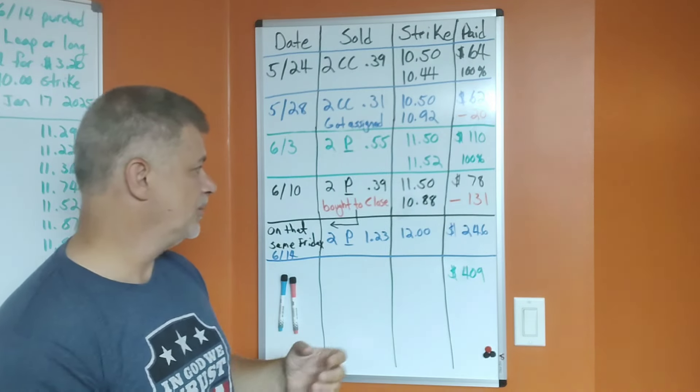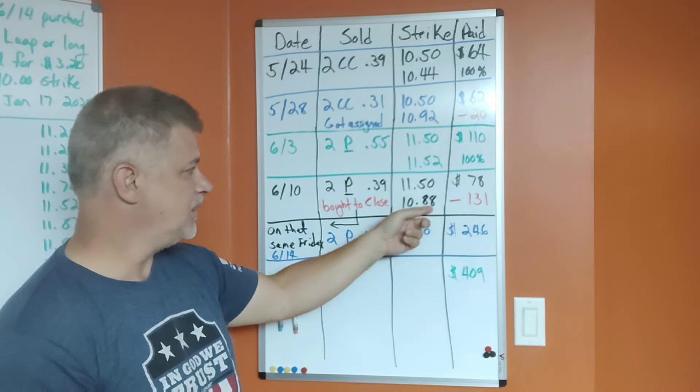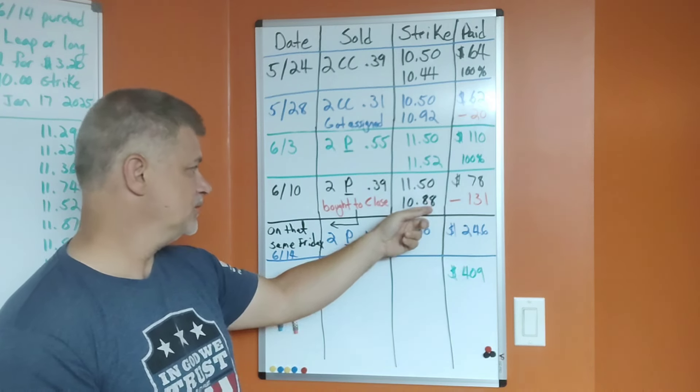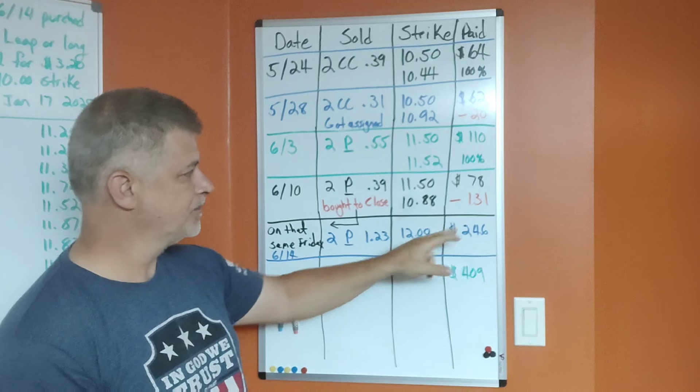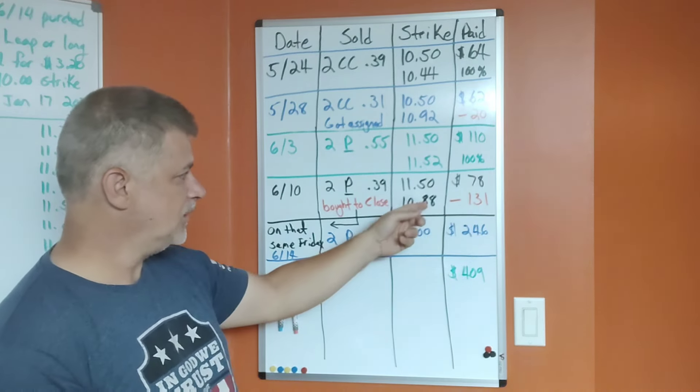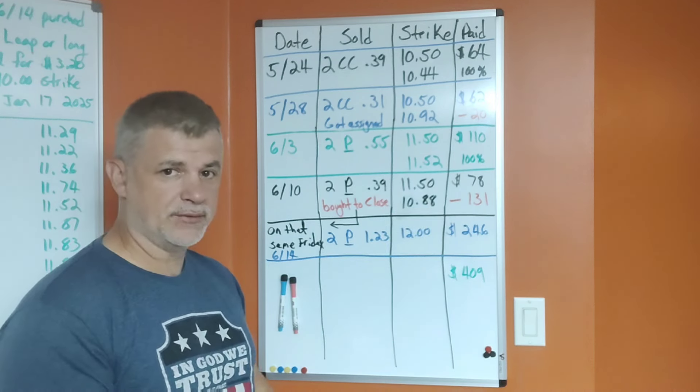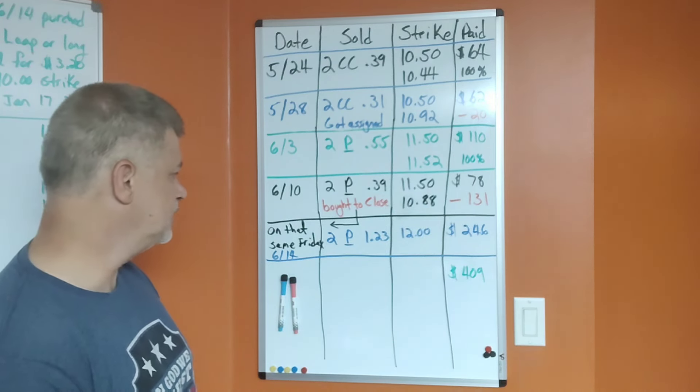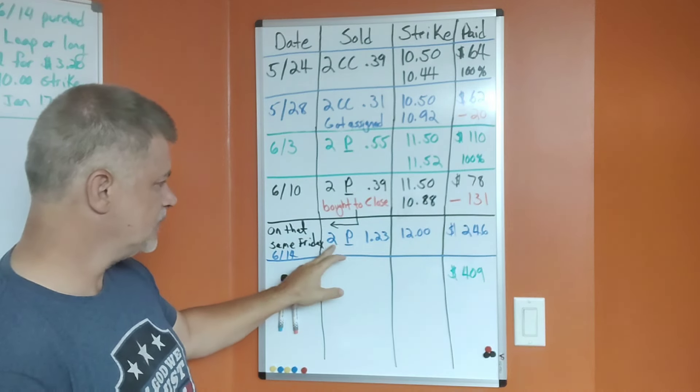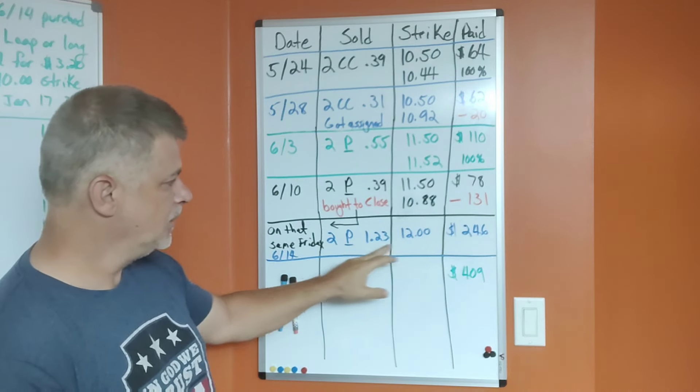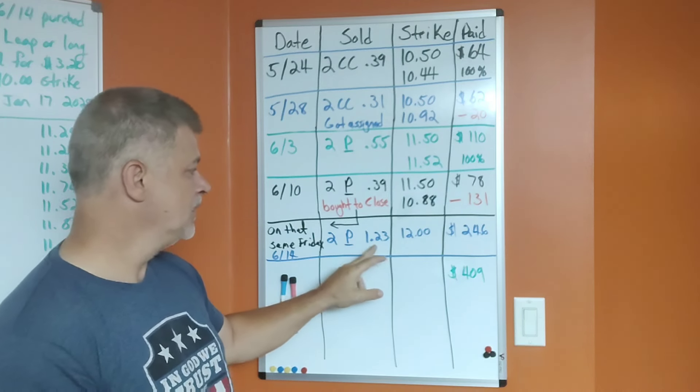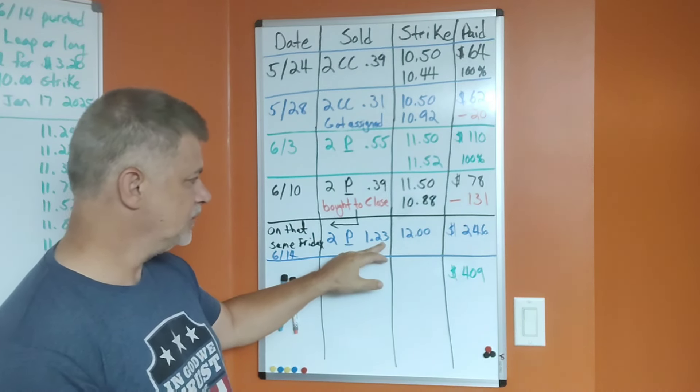This is when it was disclosed that RJ had sold some shares, so we got that big pullback, and the market had a pullback. It closed at $10.88. Now what I decided to do here was I decided to not get assigned, so I bought to close. I paid $131 to do that. And then since I felt like the sell-off was rather unjustified, I got fairly aggressive. I turned right back around on that same Friday after I bought to close, I sold two puts for the $12 strike price. That's a very aggressive trade; most people wouldn't do that. And I got paid $1.23, or $123 times two, so I got paid $246.